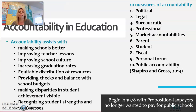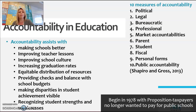Accountability in education began in California in 1978 with Proposition 13, where taxpayers no longer wanted to pay for public schools. There are 10 measures of accountability: political, legal, bureaucratic, professional, market accountabilities, parent, student, fiscal, personal forms, and public accountability.